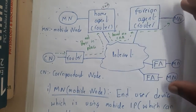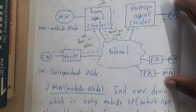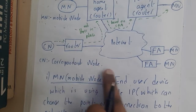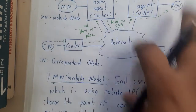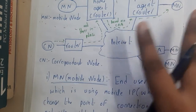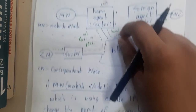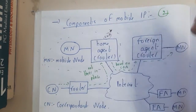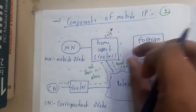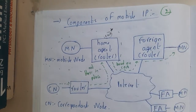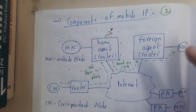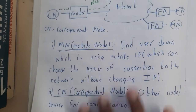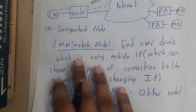In the same way, you can have multiple foreign agents, multiple routers, and multiple users in the internet. Based on the COA address — which is one of the most important things — you can find exactly where your friend is and where the data should go. Let us now go through some theoretical definitions.